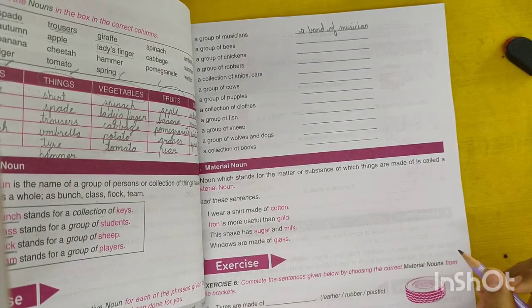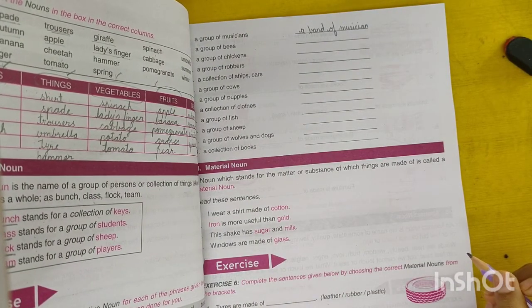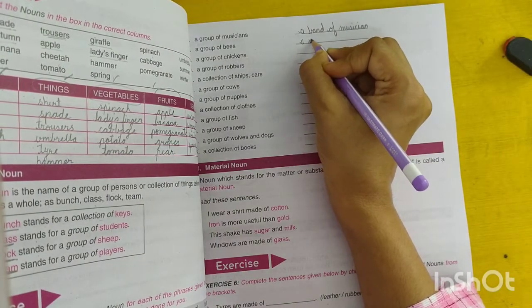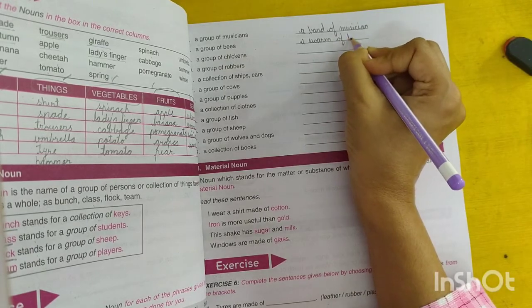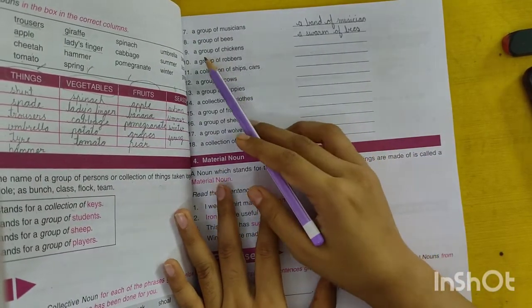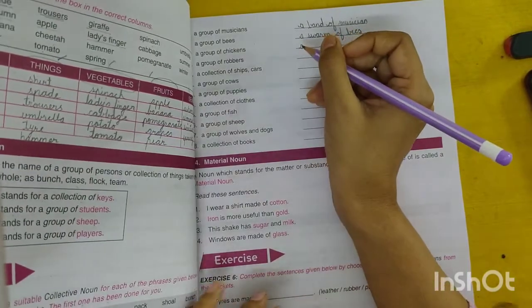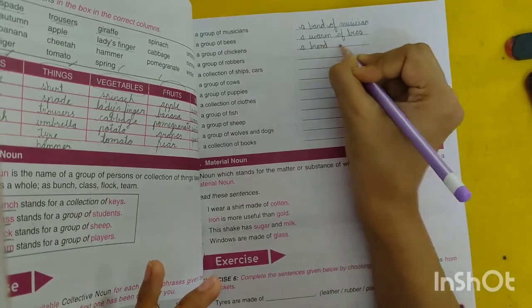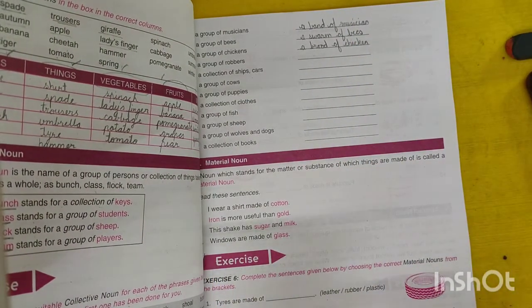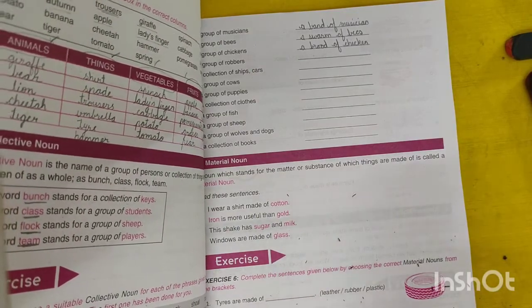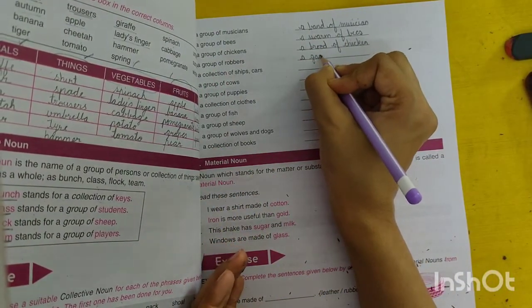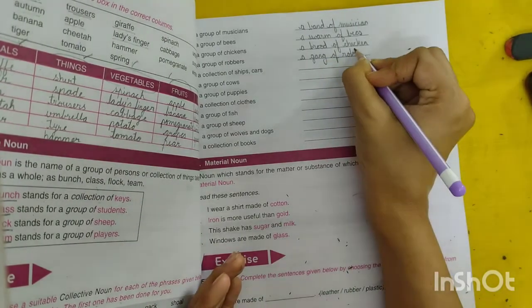A group of bees is a swarm of bees. A group of chickens are a brood of chickens. A group of robbers is a gang of robbers.